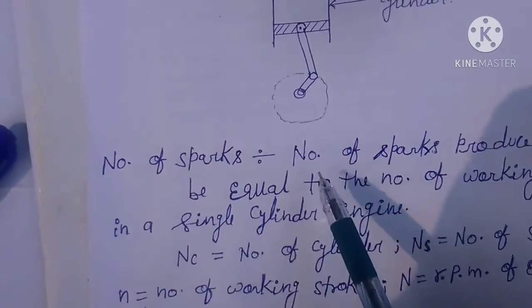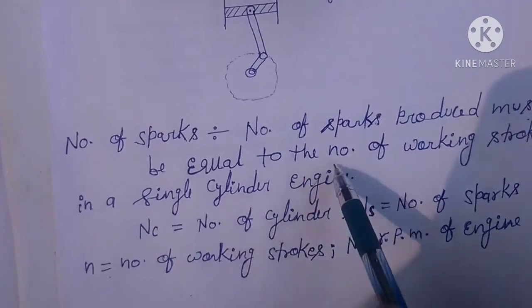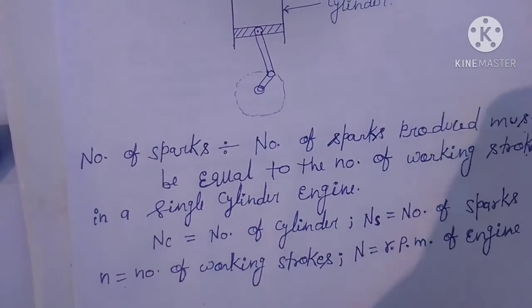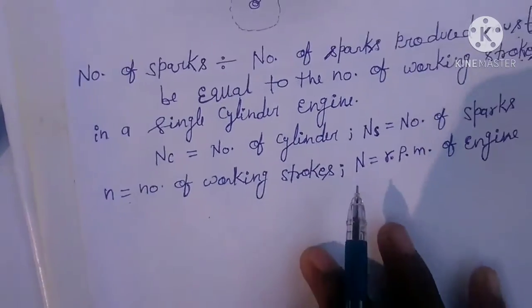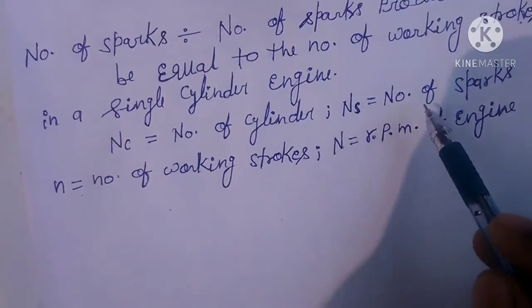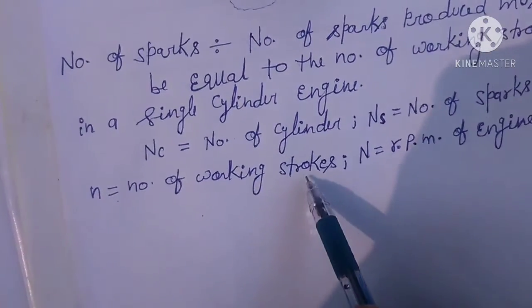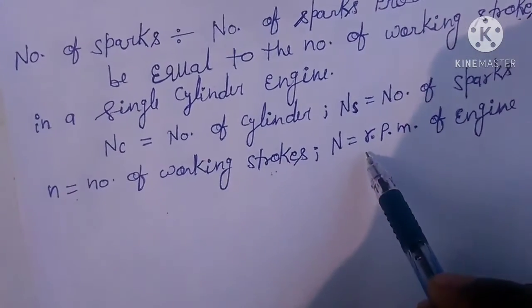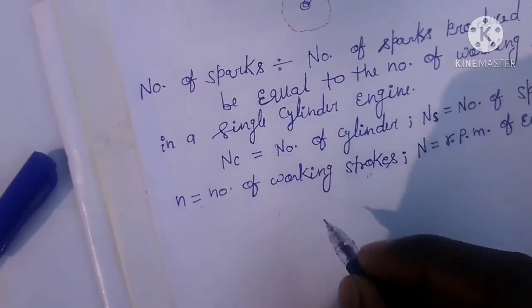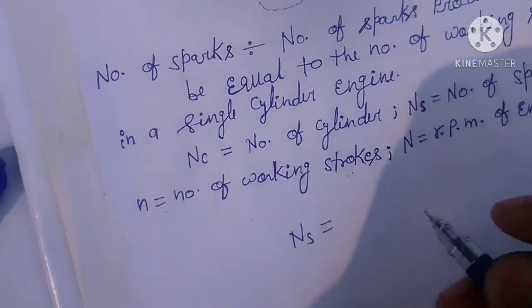The number of sparks produced must be equal to the number of working strokes in a single cylinder engine. Some notation to keep in mind: nc equals number of cylinders, ns equals number of sparks, small n equals number of working strokes, and capital N equals engine speed in RPM.